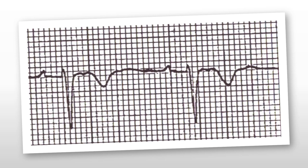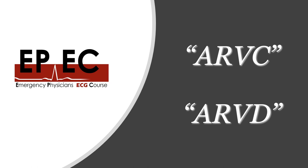Moving on, we also notice in V1 to V3 — especially in V2 — a weird-looking notch at the end of the QRS complex and the beginning of the ST segment. This is the second abnormality. Combining both abnormalities together leaves us with only one diagnosis: ARVC or ARVD — arrhythmogenic right ventricular cardiomyopathy, or arrhythmogenic right ventricular dysplasia.